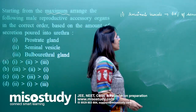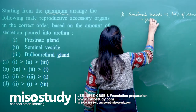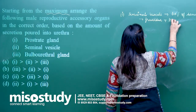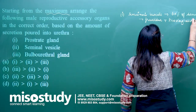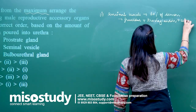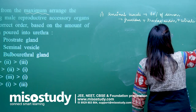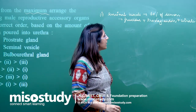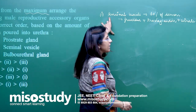What is present in the seminal vesicle? There is a presence of fructose, prostaglandins, citrate, inositol, and so on. So maximum secretion comes from the seminal vesicle.